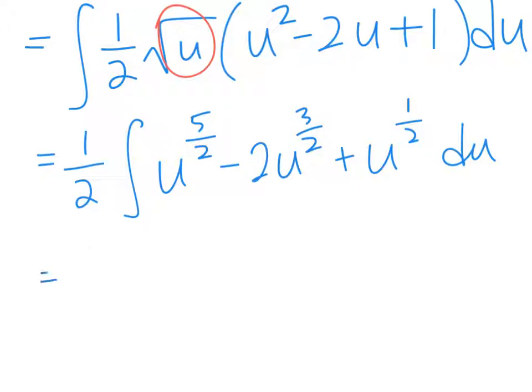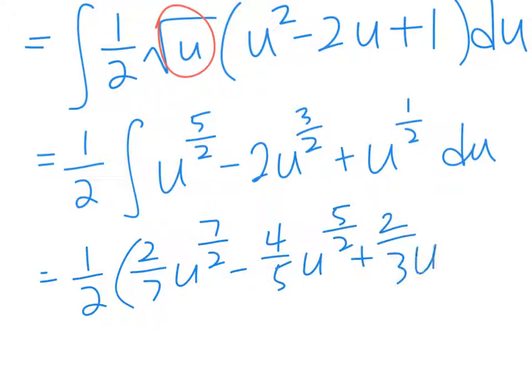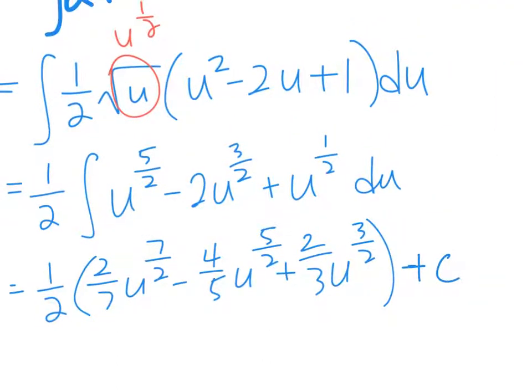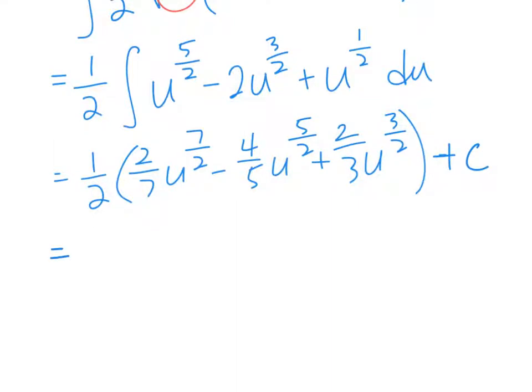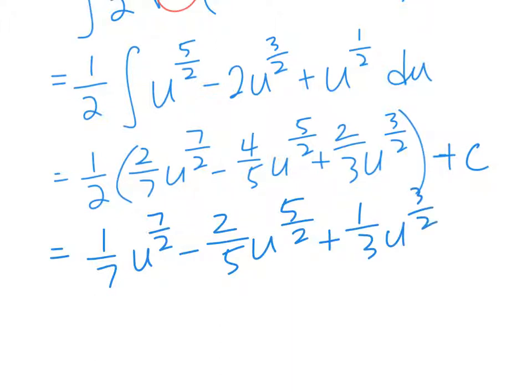So that should be 1 half, 2 sevenths u to the 7 over 2 minus 4 over 5, u to the 5 over 2 plus 2 thirds u to the 3 over 2 plus c. Okay, so simplify that, you get 1 seventh u to the 7 over 2 minus 2 over 5, u to the 5 over 2 plus 1 third, u to the 3 over 2 plus c.